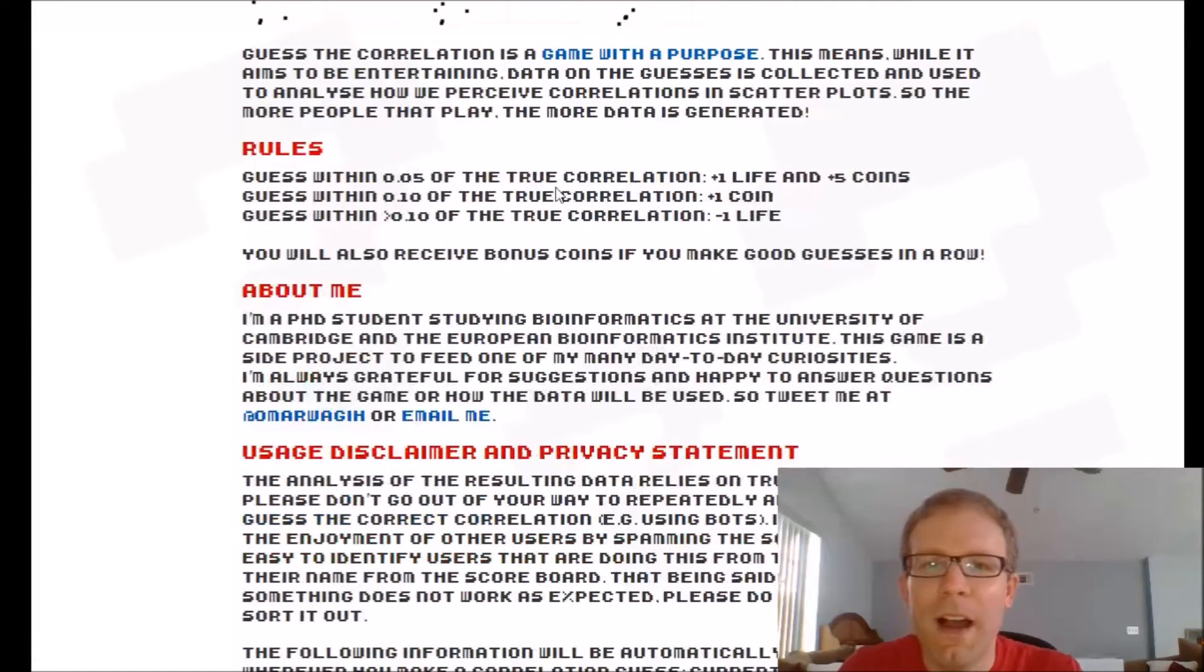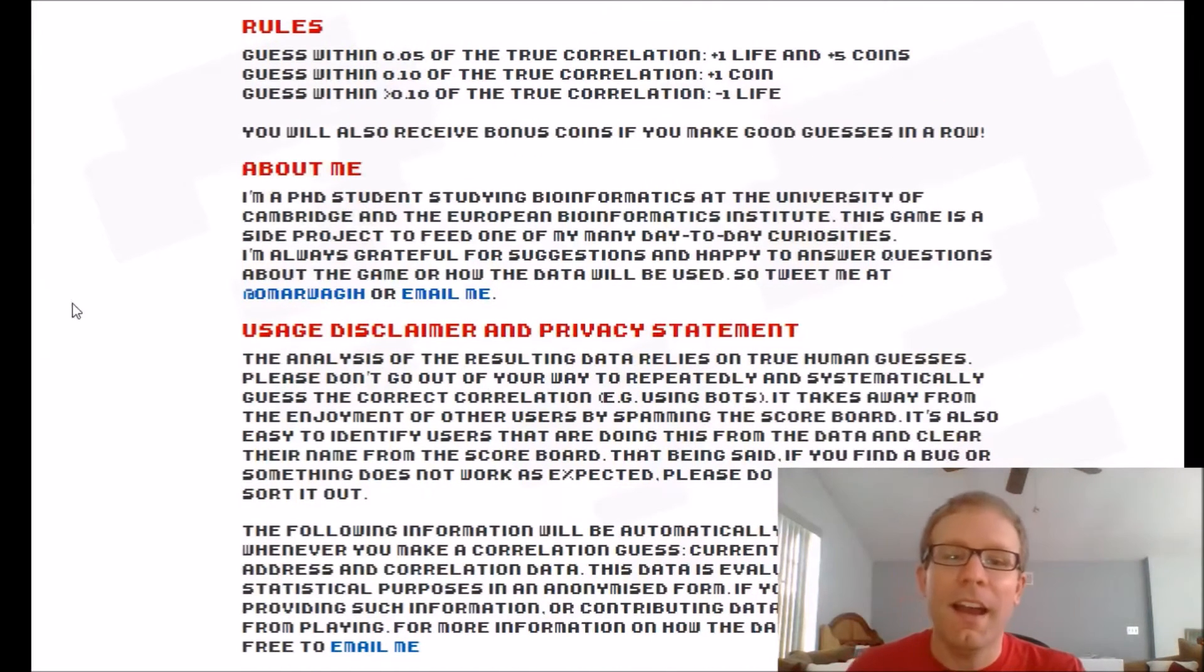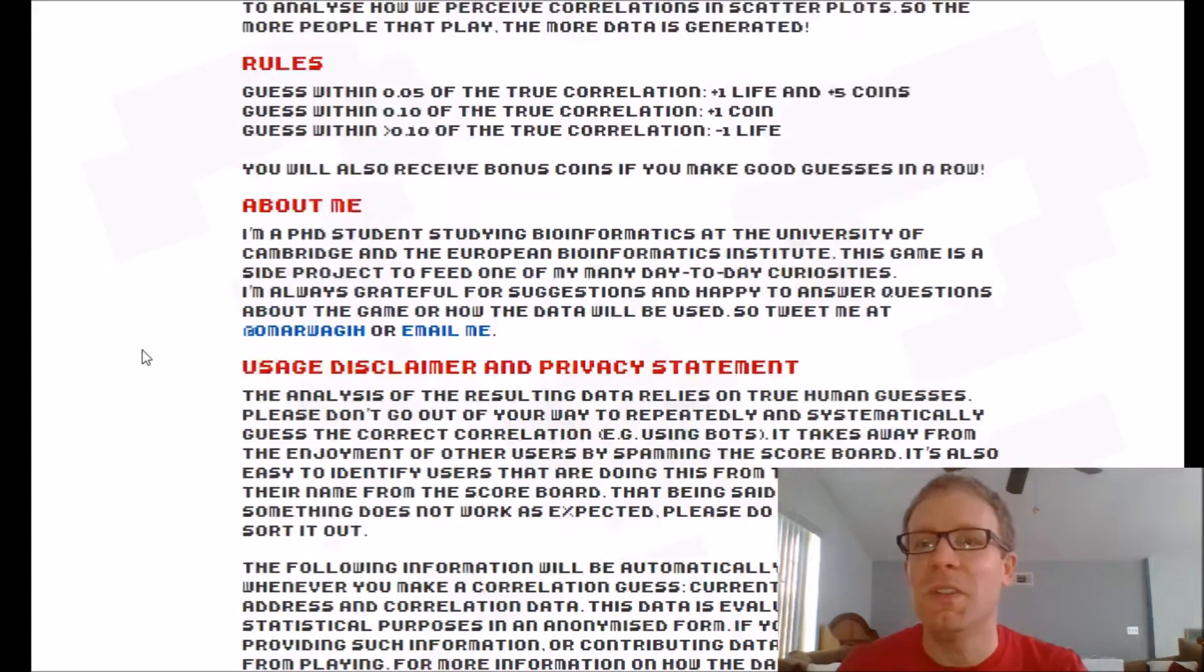Basically if you guess within 0.05 of the true correlation you get an extra life and some extra coins. The coins are then used to tabulate your score. If you guess within 0.1 you get a coin. And if you guess with a greater error than 0.1 then you lose a life. You start out with three lives. They're hearts. So I tend to think of them as health not lives. But you know that's just an artistic interpretation. And the student is actually using this in some data analysis.